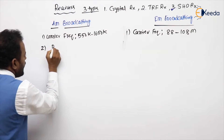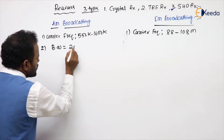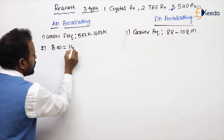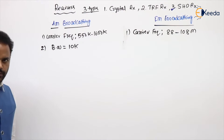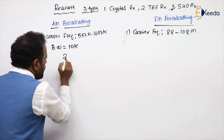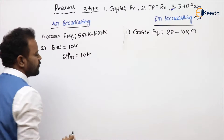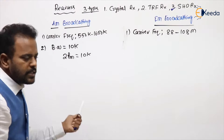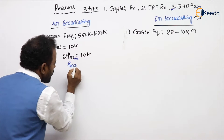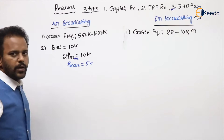The bandwidth of each AM radio station is 10 kHz. The bandwidth formula in AM is 2·FM, which equals 10 kHz. So the maximum message frequency considered in AM radio is Fmax = 5 kHz.